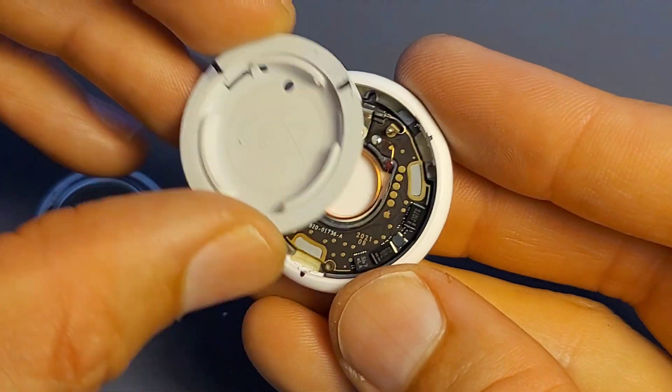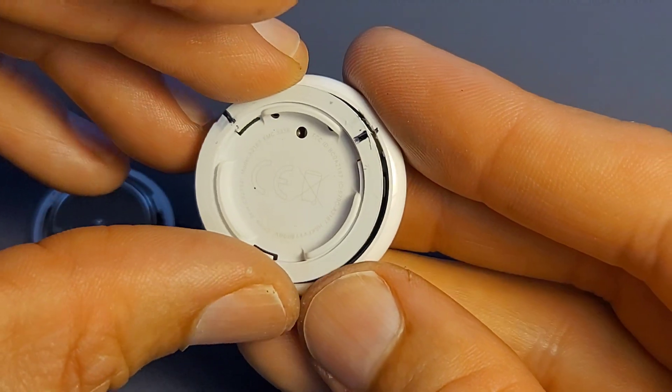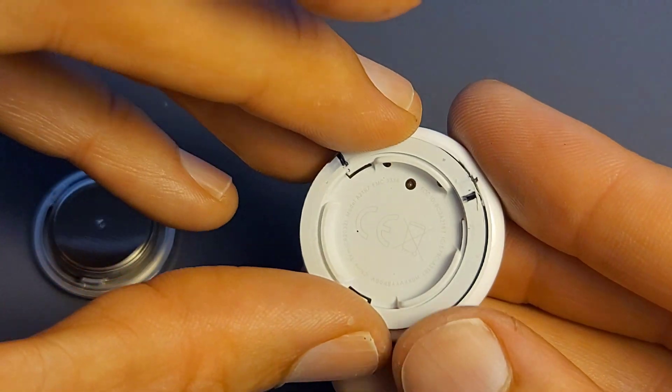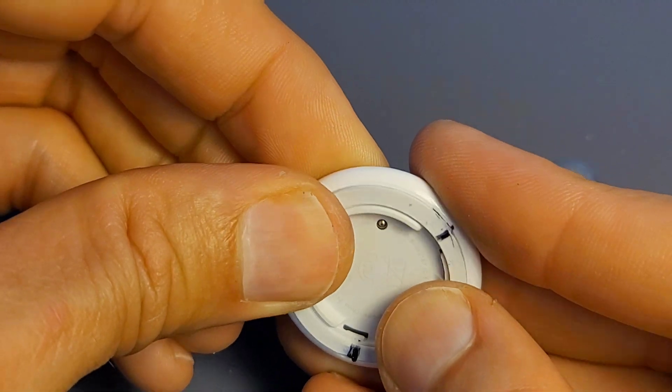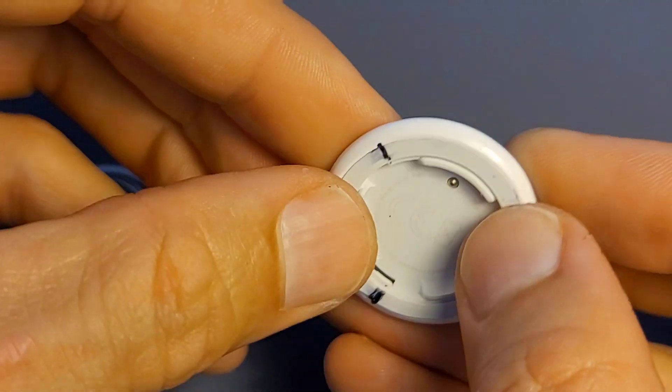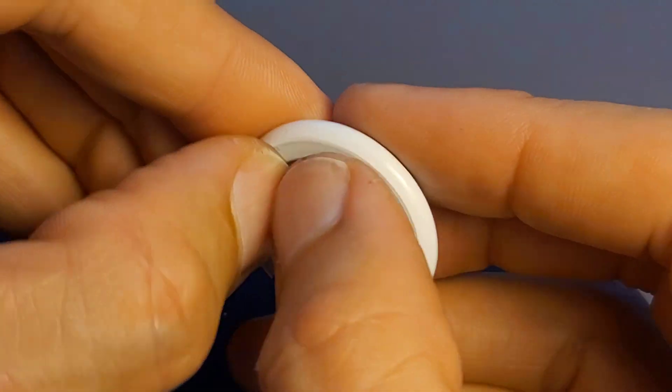Now to put it back together, put your battery contacts up. The hole for the battery contacts goes up. Bring this together and snap it down.